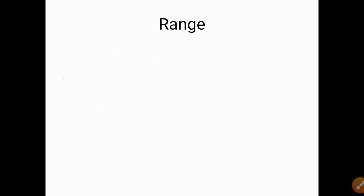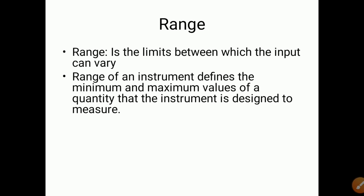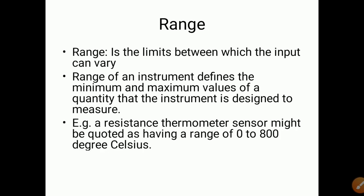First, we will study range. Range is the limits between which the input can vary. Any instrument has an upper limit and a lower limit — that is called the range. The range of an instrument defines the minimum and maximum values of a quantity that the instrument is designed to measure. For example, a resistance thermometer sensor might have a range of 0 to 800 degrees Celsius.